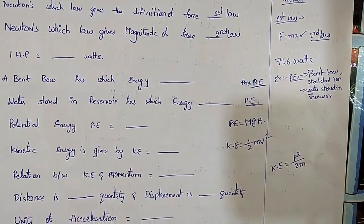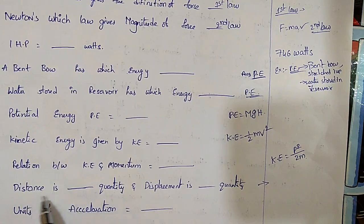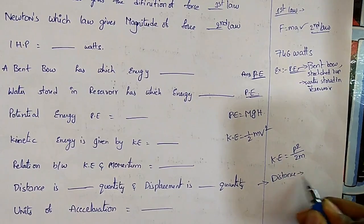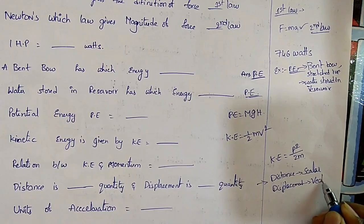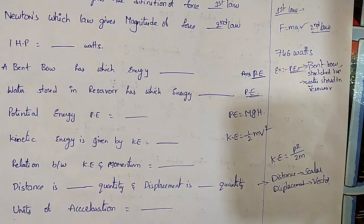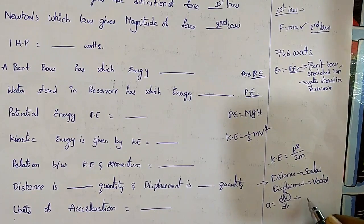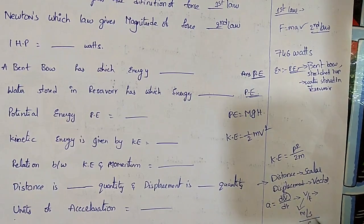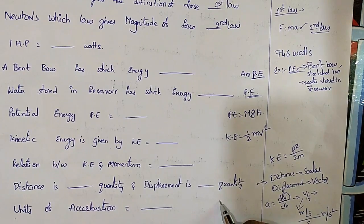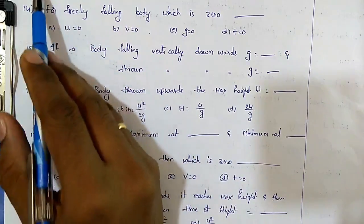Distance is a scalar quantity because it depends only on magnitude. Displacement has both magnitude and direction, so displacement is a vector quantity. The units of acceleration: since acceleration equals rate of change of velocity, that is velocity divided by time, the units are meters per second squared.